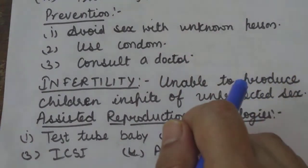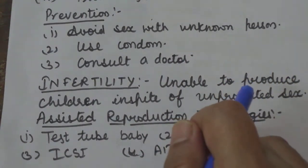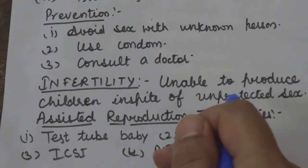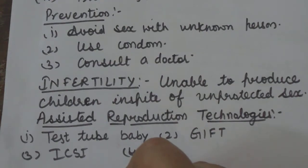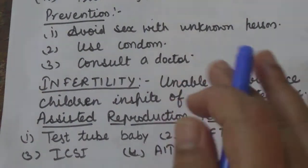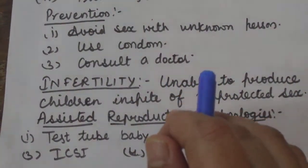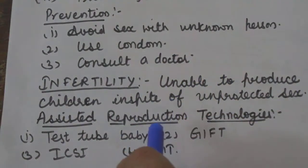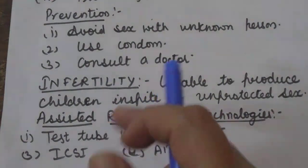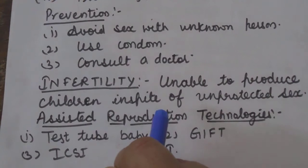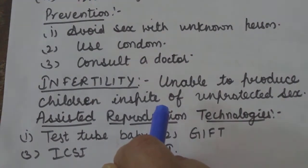A surrogate mother is a female whose uterus is healthy and can support the growth of an embryo. For example, if a woman's uterus is not functioning properly but she can produce ova, and her husband has a good sperm count, the zygote of that couple is transferred into the surrogate mother, who then gives birth to their child. However, the use of surrogate mothers raises ethical and legal problems, such as disputes over rights over the child.